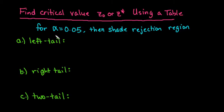For this one using the table, what we will do is alpha equals 0.05. For a z critical value, you only have to know your alpha level and whether you have a one-tail or a two-tail test. For the first one, a left-tail...